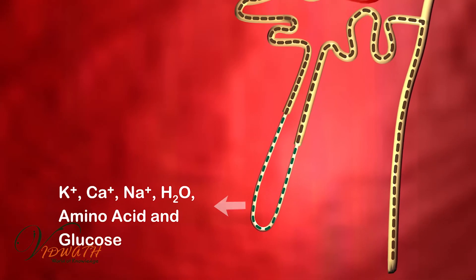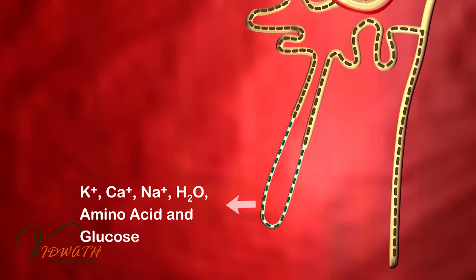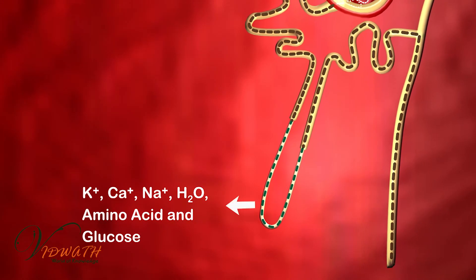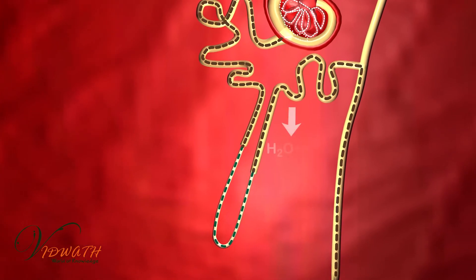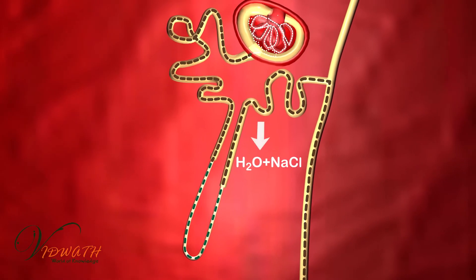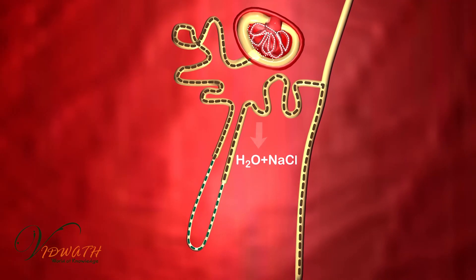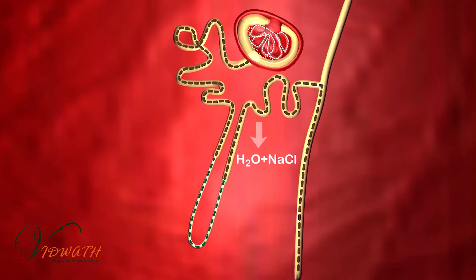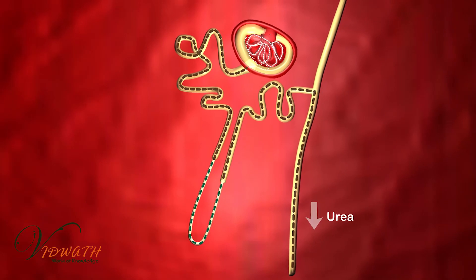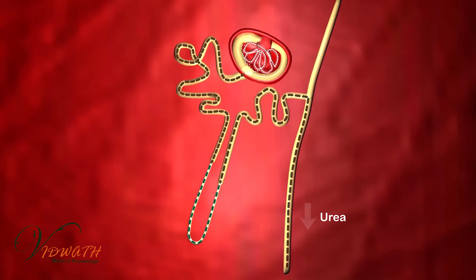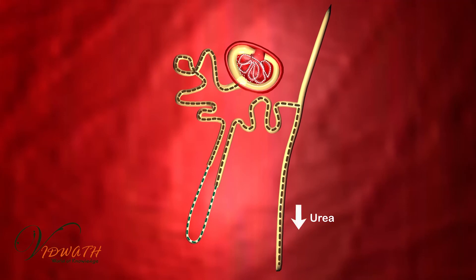Potassium ions, calcium ions, sodium ions, water, amino acids, and glucose are eliminated in Henley's loop. H2O and NaCl are reabsorbed into the blood in the proximal convoluted tubule region. Only uric acid and urea pass through the collecting duct.